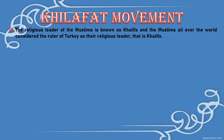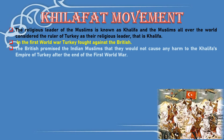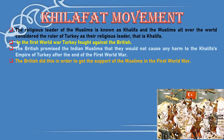Children, the religious leader of the Muslims is known as the Khalifa, and Muslims all over the world considered the ruler of Turkey as their religious leader, i.e., the Khalifa. In the First World War, Turkey fought against the British. Obviously, the Muslims would not help the British against their own leader. But the British promised the Indian Muslims that they would not cause any harm to the Khalifa's Empire of Turkey after the end of the First World War. The British did this in order to get the support of the Muslims in the First World War.